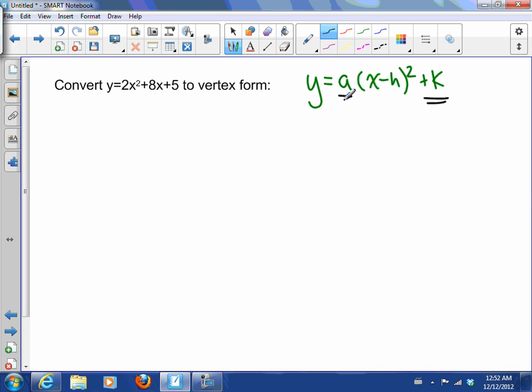The first thing you'll notice is that this plus k here is outside the bracket and there's an a factored out. To start making it look like that, what we're going to do is block off this part right here, 2x² + 8x, and we're going to leave that plus 5 out there because we want that plus k out there.